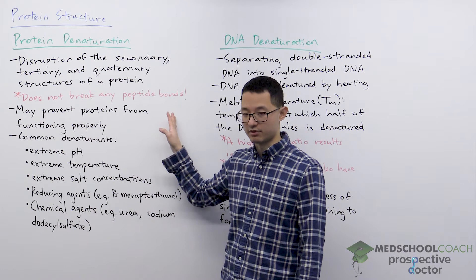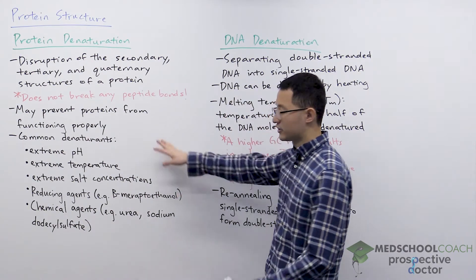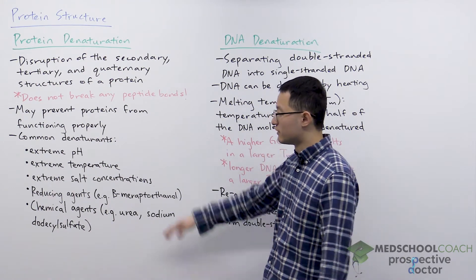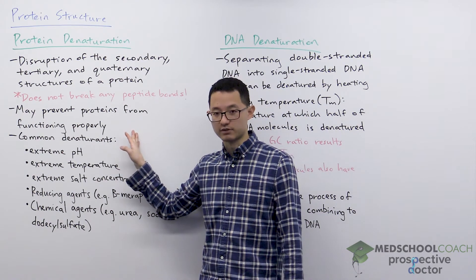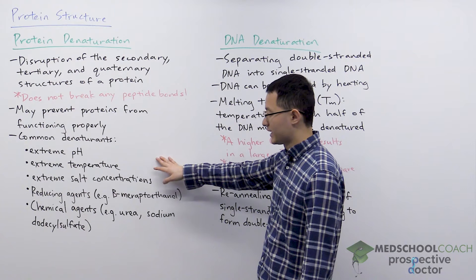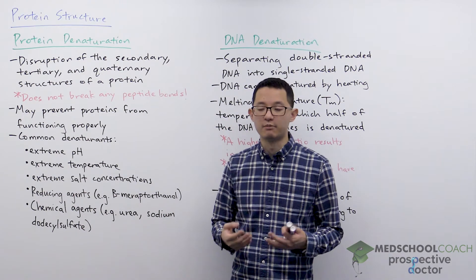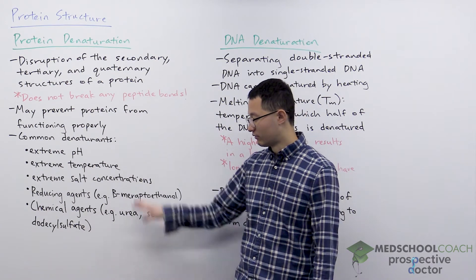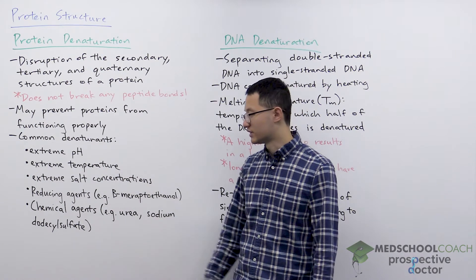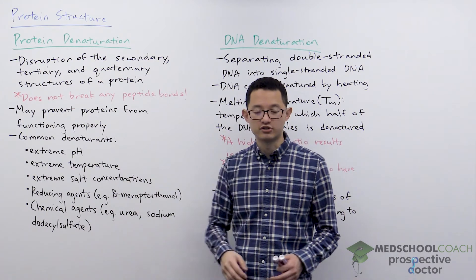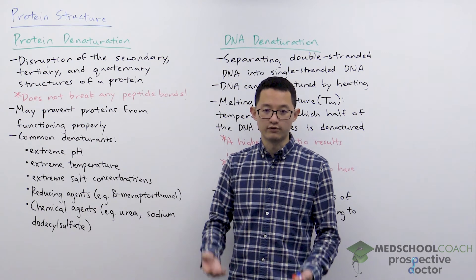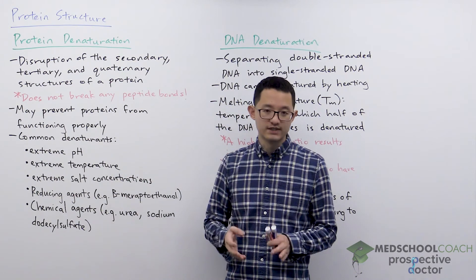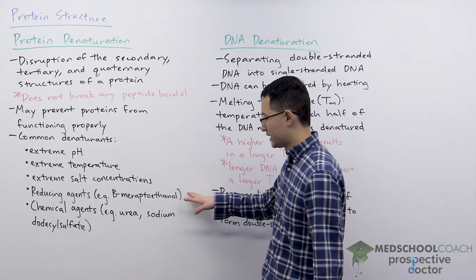You are not breaking any peptide bonds in protein denaturation. Denaturation is important because proteins fold to form a particular structure to carry out their functions, so if a protein is denatured, that may prevent it from functioning properly. An important thing to know is what conditions cause a protein to be denatured. One of them is extreme conditions — extreme pH, temperature, or salt concentrations can all disrupt protein folding, whether very low or very high.